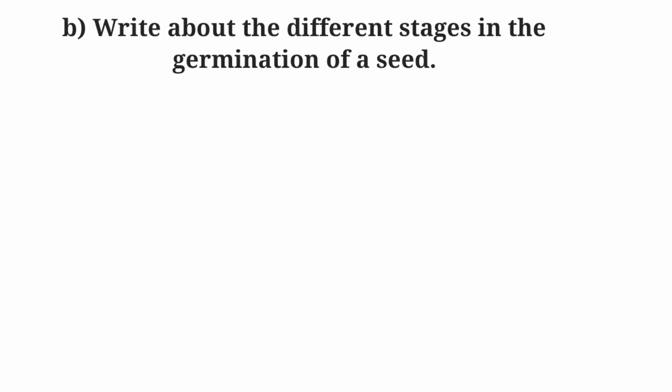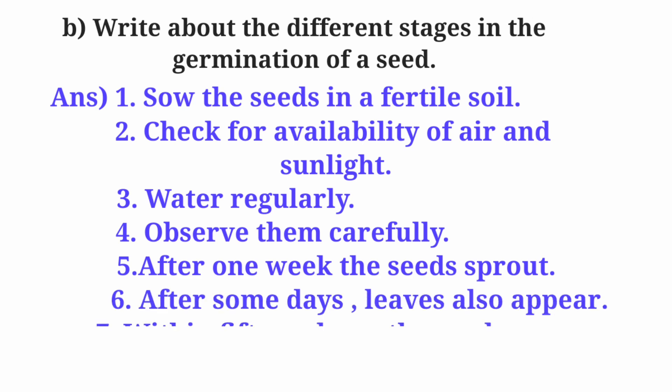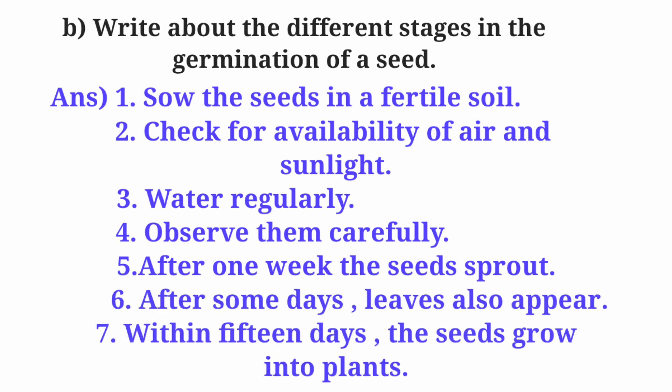Question B. Write about the different stages in the germination of a seed. Answer: Sow the seeds in fertile soil. Check for availability of air and sunlight. Water regularly. Observe them carefully. After one week, the seeds sprout. After some days, leaves also appear. Within 15 days, the seeds grow into plants.